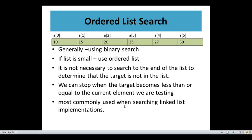Our last type is ordered list search. When a list is ordered, we would normally use binary search, but we can also use linear search for an ordered list. If the list is small, we use this ordered list search. Here it is not necessary to search to the end of the list to determine whether the target is present or not. We can stop when the target becomes less than or equal to the current element.